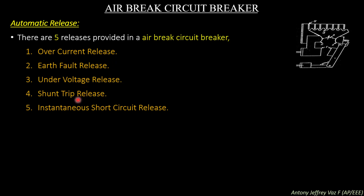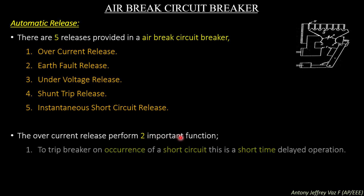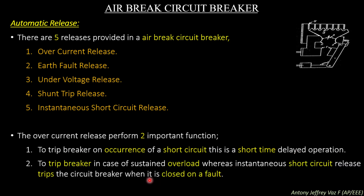These five protections are present inside the air break circuit breaker. The over-current release performs two main important functions: to trip the breaker on occurrence of a short circuit in a short time delayed operation, and to trip the breaker in case of a sustained overload. The instantaneous short circuit release trips the circuit breaker when it is closed on a fault. Overloading occurs when more current passes through the contacts than the circuit breaker's rating, and this percentage increase also trips the circuit breaker contacts due to over-current release.